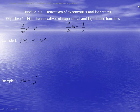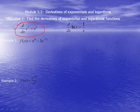Find the derivatives of exponential and logarithmic functions. The derivative of e to the x is equal to e to the x — a very simple formula. Our second formula is the derivative of the natural log of x is equal to 1 over x. Another very simple function.